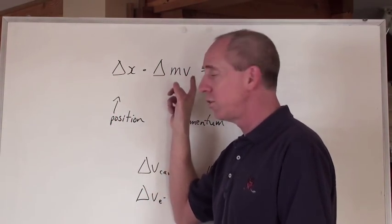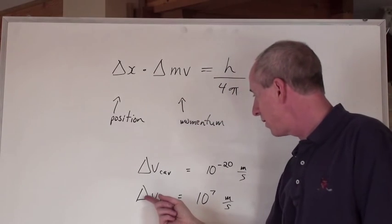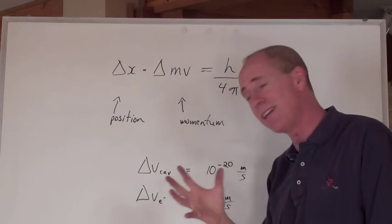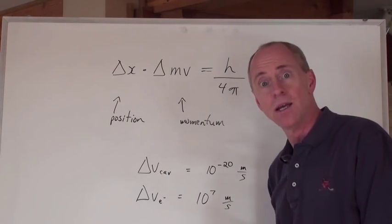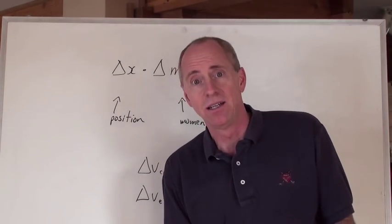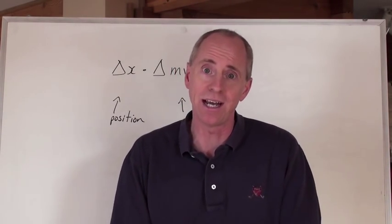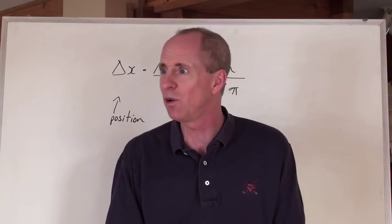You solve for the uncertainty in the speed, and you get the uncertainty in the speed of an electron of a magnitude of 10 to the 7, close to 10 to the 8 meters per second. But the speed of light is 10 to the 8, it's 3 times, 2.9979 times 10 to the 8 meters per second.